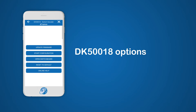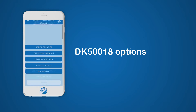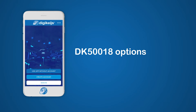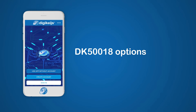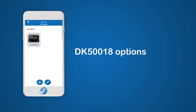Now that the device is added to the app and the connection is opened, let's explain the options that are available. Please note the X on the top right corner is used to disconnect the device from Bluetooth and will bring you back to the main page of the app.